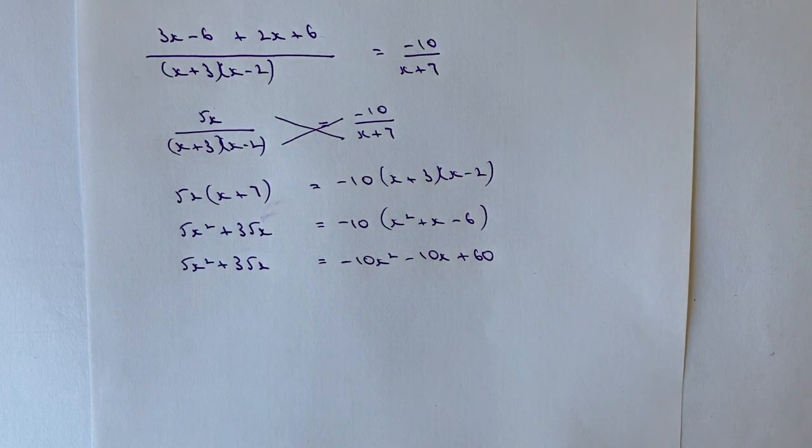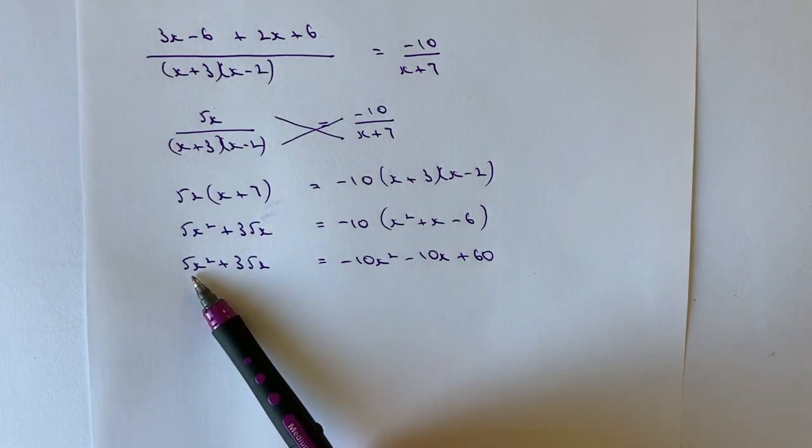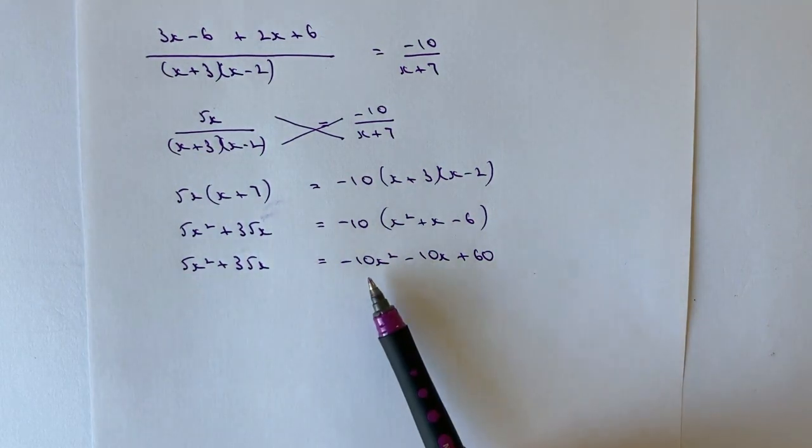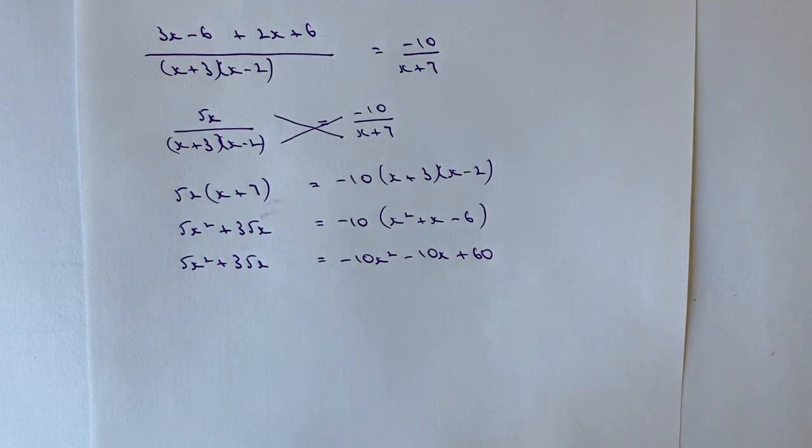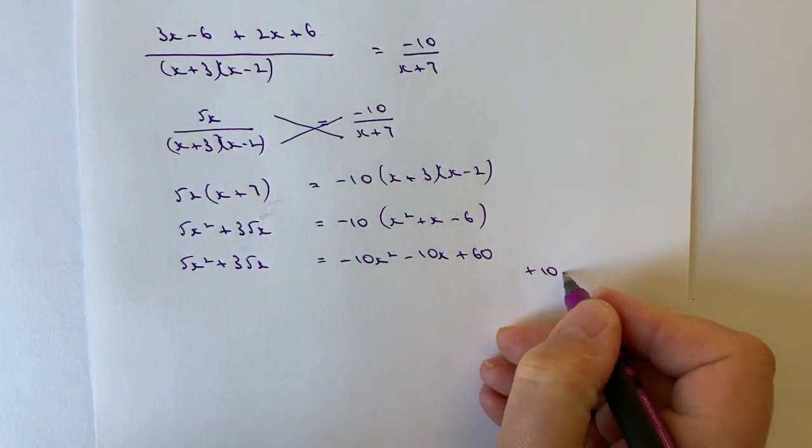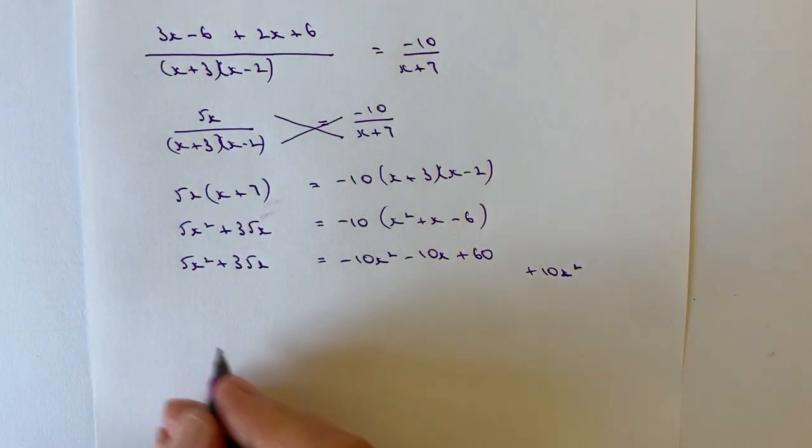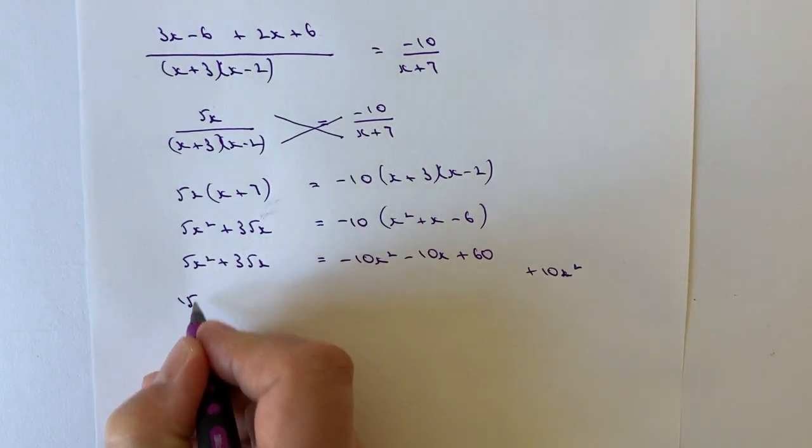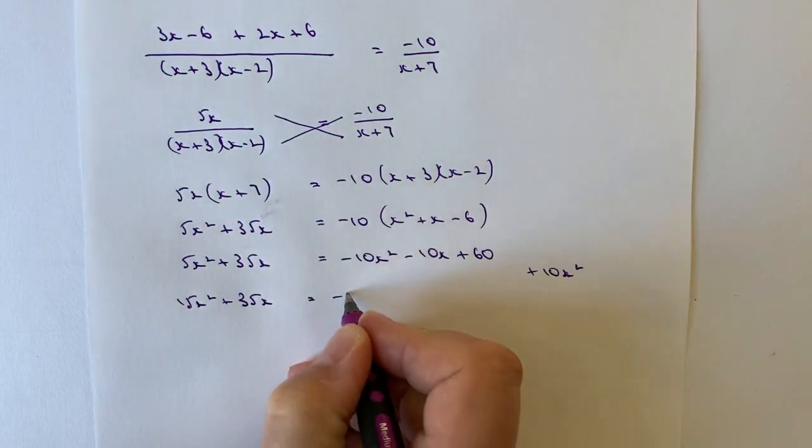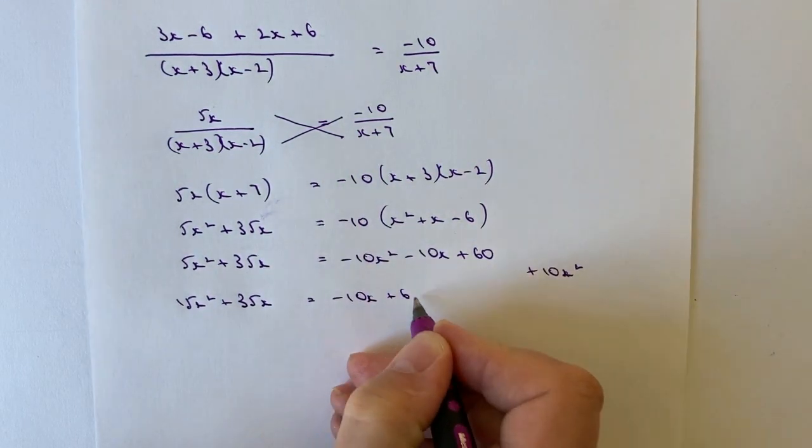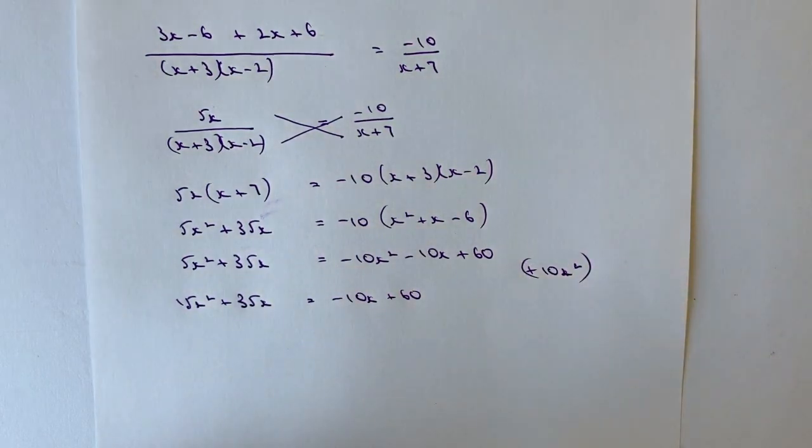What I'm going to do is I've got 5x squared, which is a positive term, and I've got minus 10x squared. If I add 10x squared to both sides, it means I lose this minus. I'm going to add 10x squared to both sides, and that's going to give me 15x squared plus 35x, and that's going to equal minus 10x plus 60.